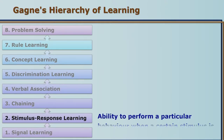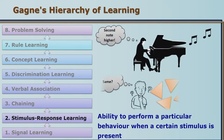Next is stimulus-response learning. For every stimulus, the individual learns to give the correct response. In the process of learning, the individual will have to practice many times to give the right response to the right stimulus. This takes a lot of practice, but once it is learnt, the individual can give only a particular response to a particular stimulus.